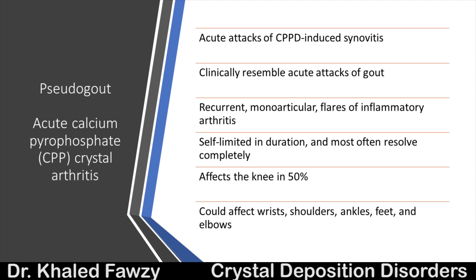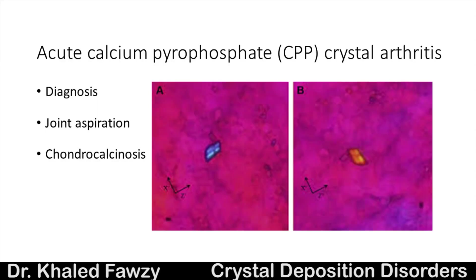Unlike gout, which primarily affects the first metatarsophalangeal joint, pseudogout affects the knee in 50% of cases. It could also affect the wrists, shoulders, ankles, feet, and elbows. To diagnose it, aspirate the joint to exclude infection and identify rhomboid-shaped calcium pyrophosphate crystals. An X-ray finding of chondrocalcinosis also helps confirm the diagnosis.